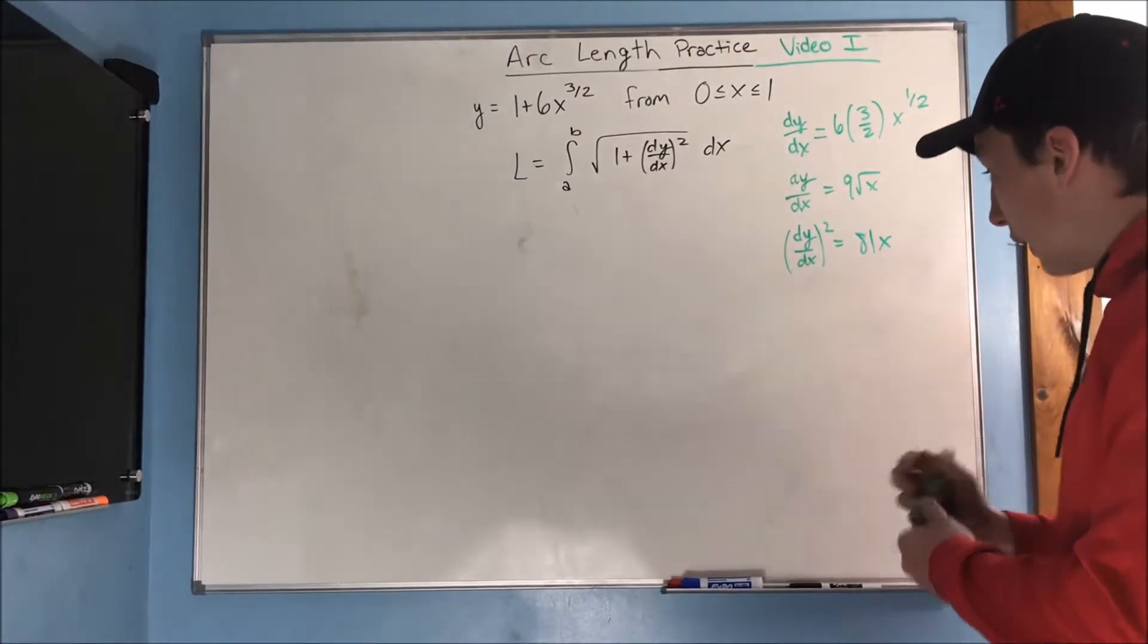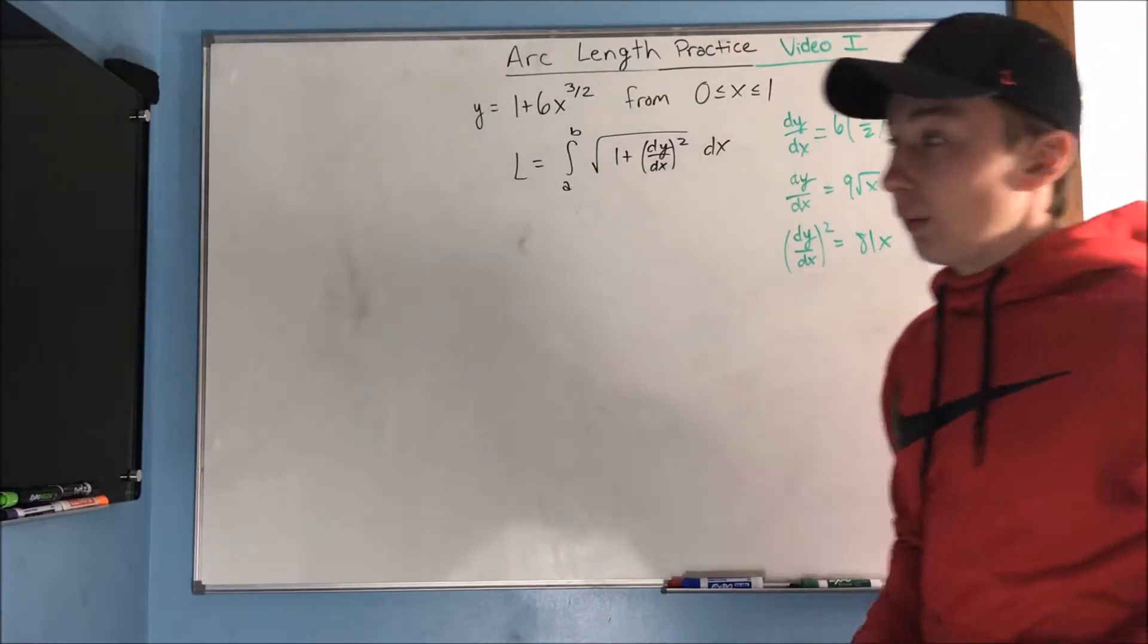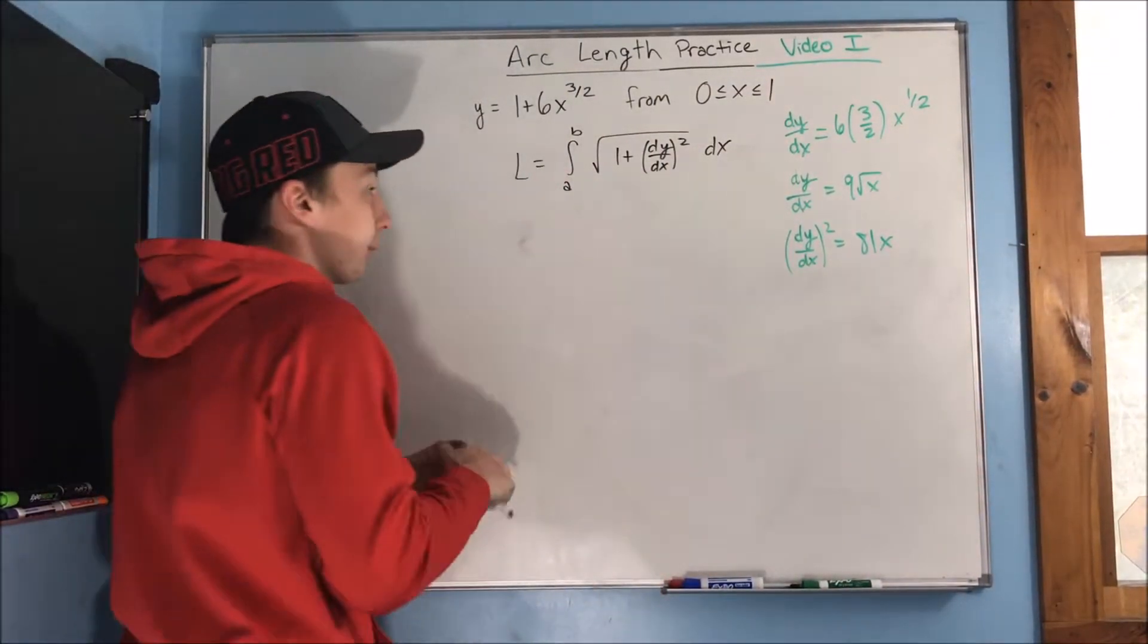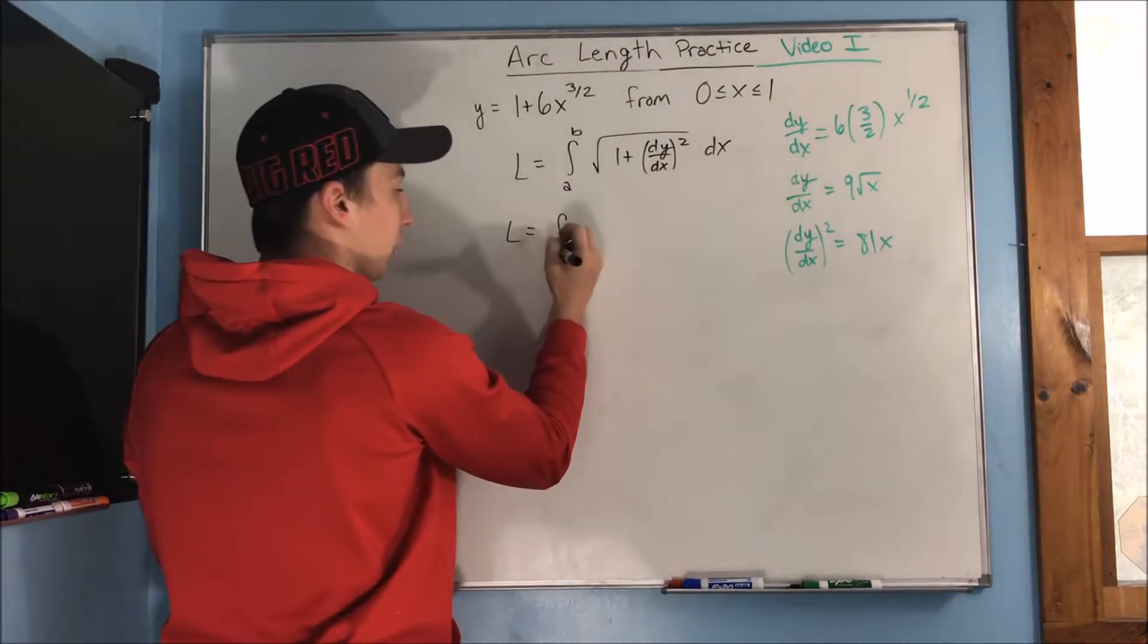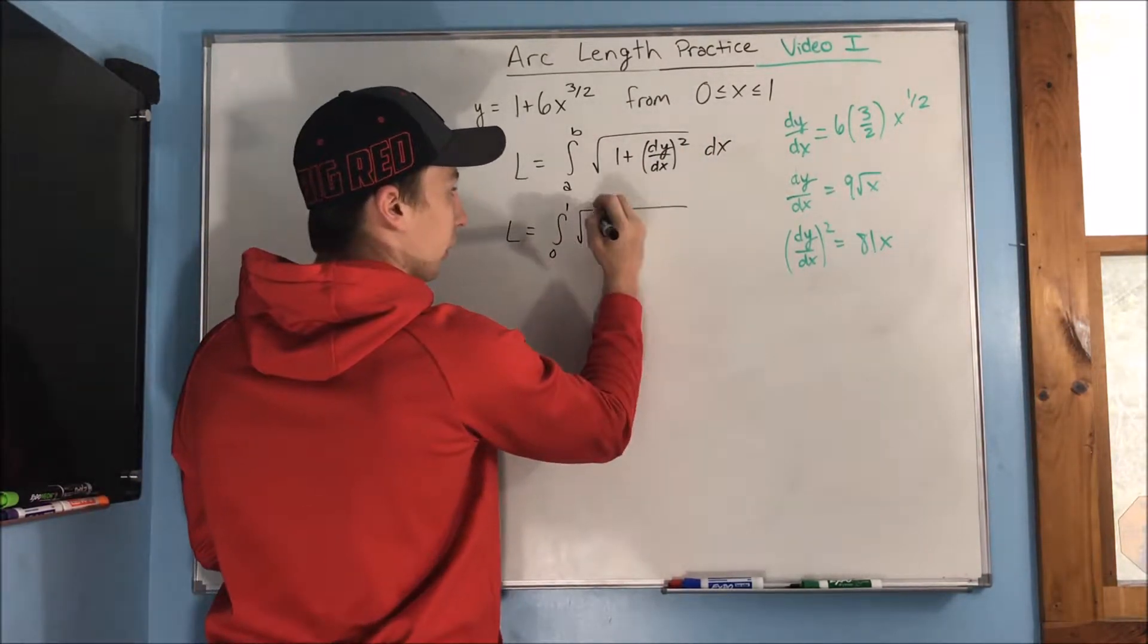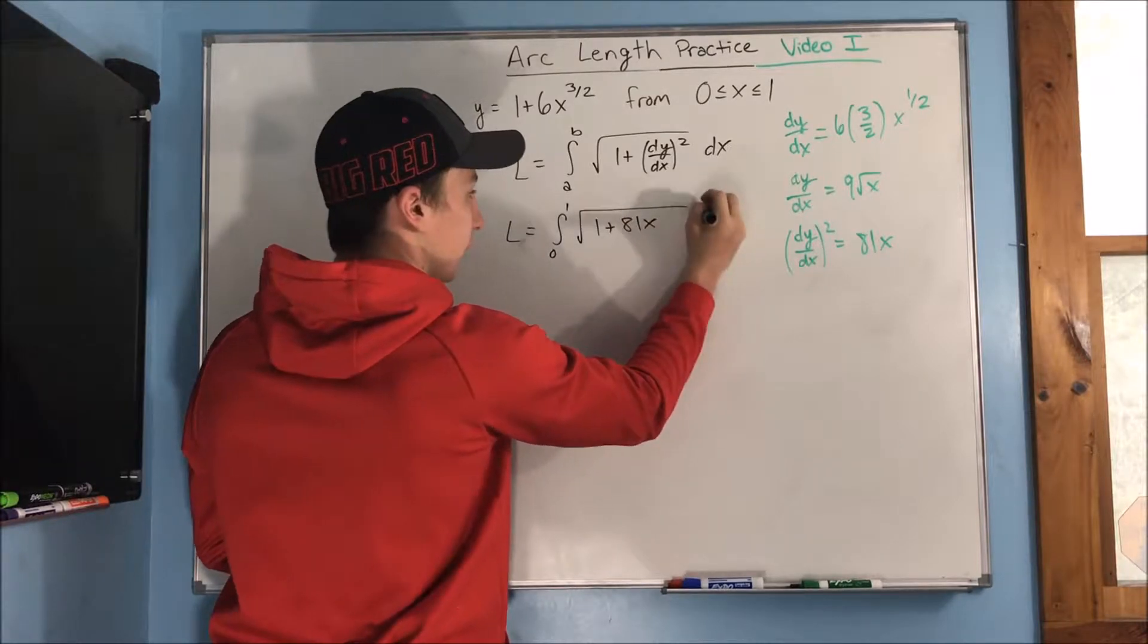So we can now substitute that in for our dy dx squared. The arc length is going to equal the integral from 0 to 1, the square root of 1 plus 81x dx.